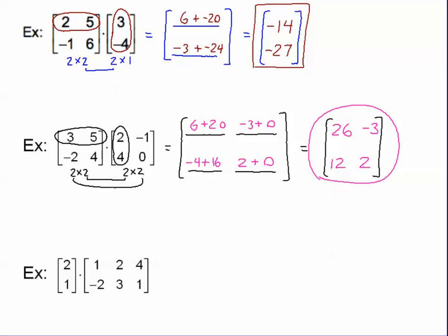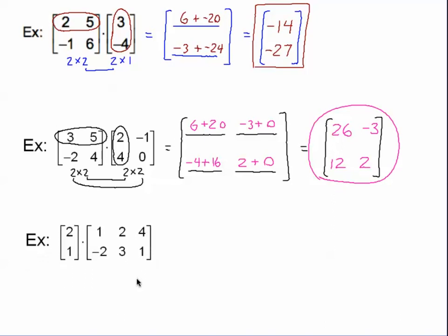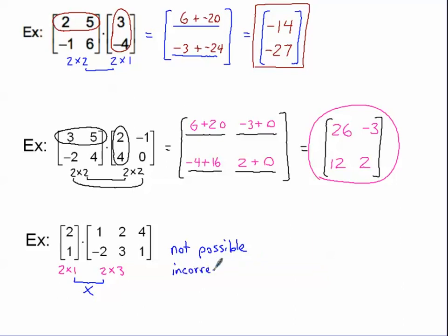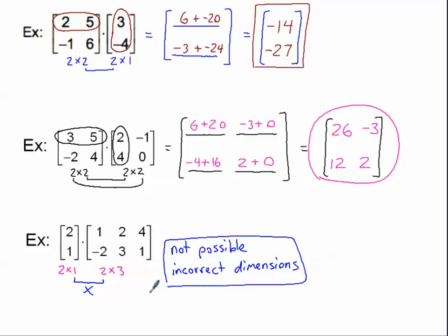For the third example, always check the dimensions first. The first matrix is a 2 by 1 and the second matrix is a 2 by 3. The middle numbers do not match up, so this multiplication is not possible. The reason is incorrect dimensions — the dimensions do not match up. You need to say not only that you can't do it, but also explain why.